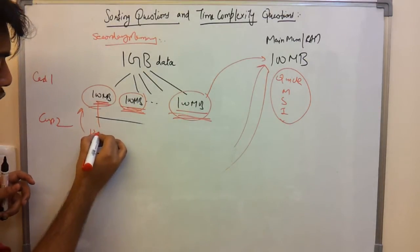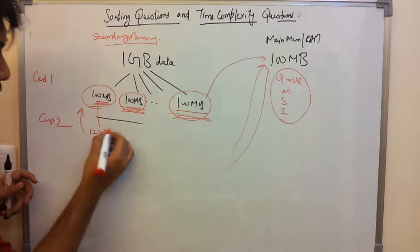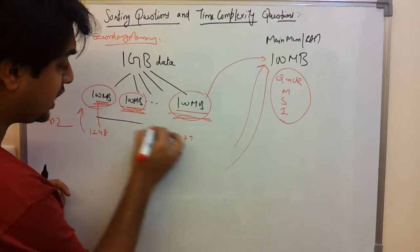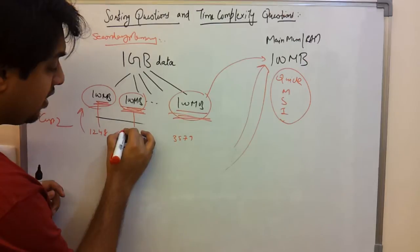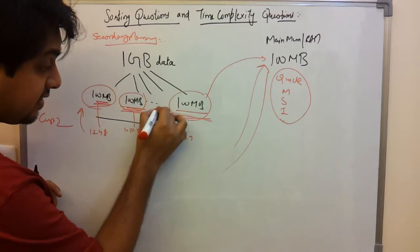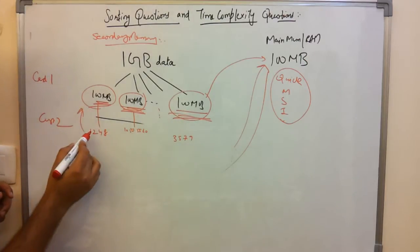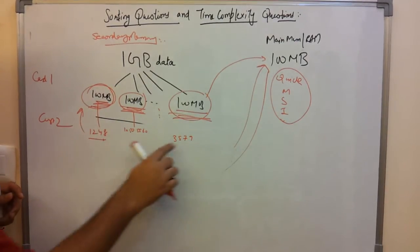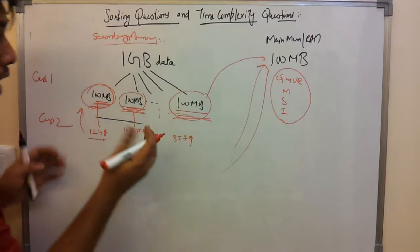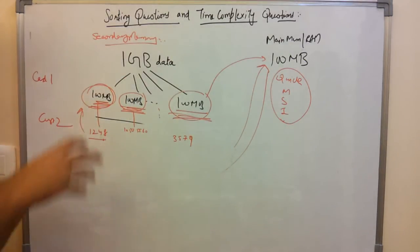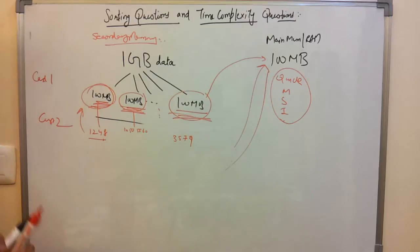For example, 100 MB chunks might contain: group one has 1, 2, 4, 8; group two has 3, 5, 7, 9; group three has 50, 55, 60. Each chunk is sorted independently within main memory. So the whole 1 GB data is sorted 100 MB at a time — each chunk is sorted, but the overall array is not yet sorted.